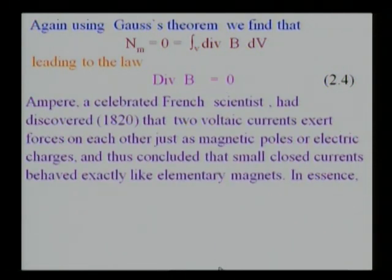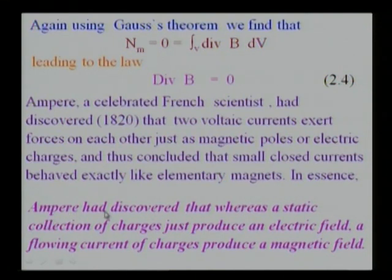Ampere, a celebrated French scientist, had discovered in 1820 that two voltage currents exert forces on each other, just as magnetic poles or electric charges, and thus concluded that small closed currents behaved exactly like elementary magnets. In essence, Ampere had discovered that whereas a static collection of charges just produce an electric field, a flowing current of charges produces a magnetic field. This was a very important law discovered by Ampere.